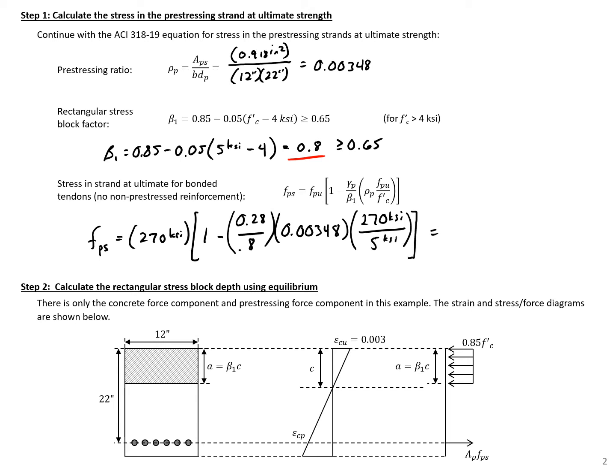Closing the bracket, we get 252 ksi. This is the stress in our strands at the nominal flexural strength of our section.